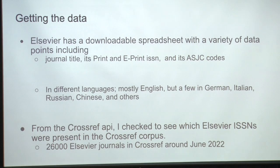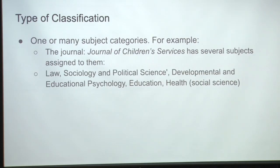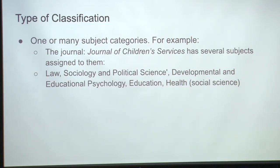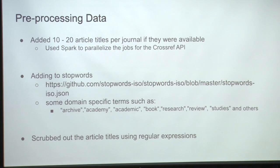As of last June, we had about 26,000 journals. In machine learning parlance, this is a type of classification problem. A journal can have one or many subject categories, so this is known as multi-label classification. For example, the Journal of Children's Services has several subjects assigned to it, as you can see. I had to do some preprocessing of data because we don't have too many abstracts and we have no full text, so basically all I could use were journal titles and their article titles.